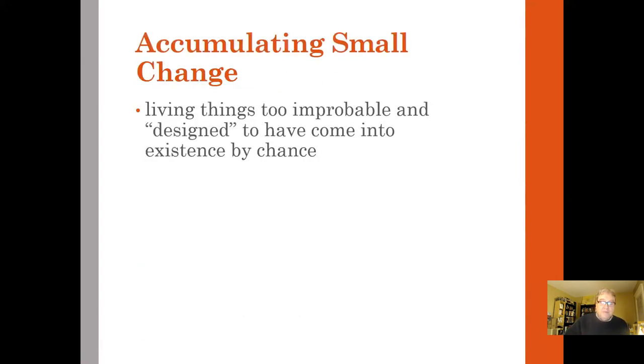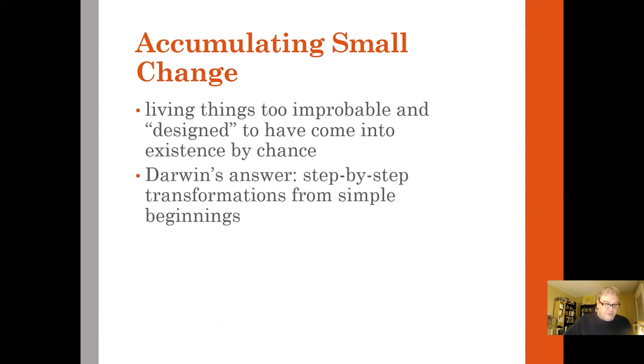The living things are too improbable and designed to have come into existence by chance. And in that, he agrees with Paley and respects him for his answer. Dawkins says that he probably would have believed the intelligent designer theory before 1859, when Darwin came out with his first books on the origin of species.